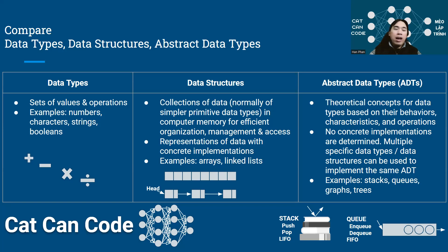And the operations that we have on these values are normally addition, subtraction, multiplication, and division. So as you can see over here, I have the illustration here showing the potential operations that you may have on a set of integers. So that's what we often refer to as data types.